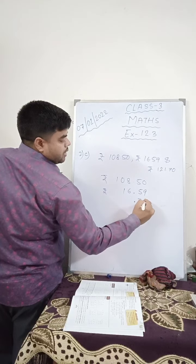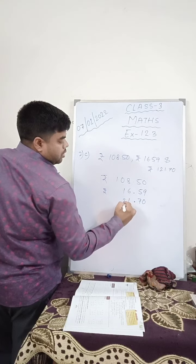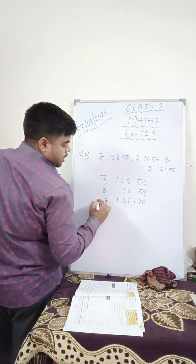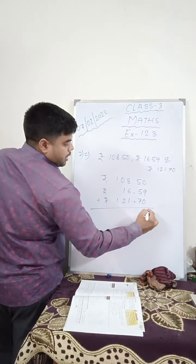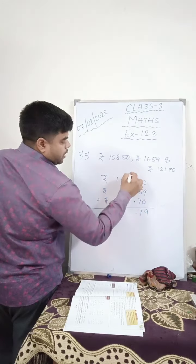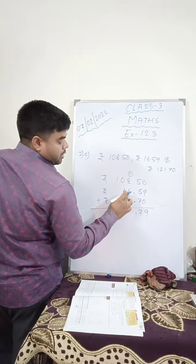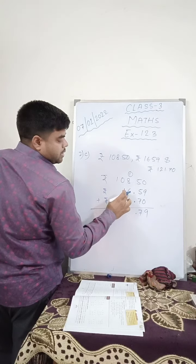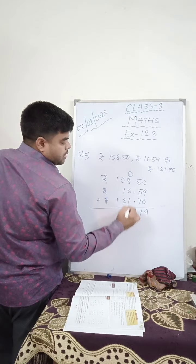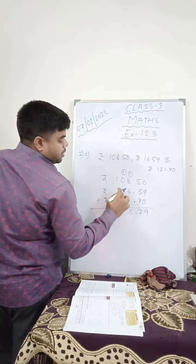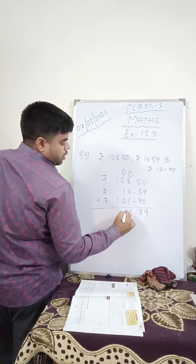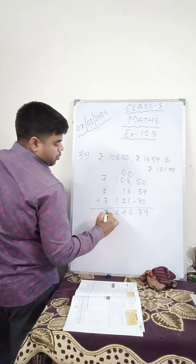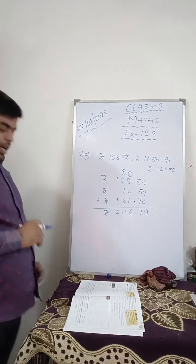This is 70. Put the decimal 70, here 1, 2, 1 and rupees. Now you add: 9, 17.1 in hand. 1 plus 7, 1 plus 8 is 9, 9 plus 6 is 15, 15 plus 1 is 16, 15, 1 in hand. 1 plus 1 is 2, 2 plus 2 is 4 and this is 2 and here is this. I hope all of you have understood.